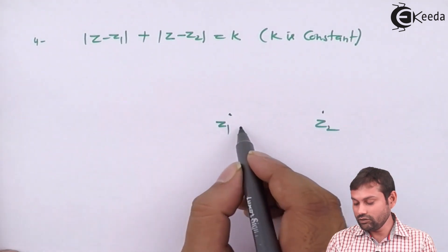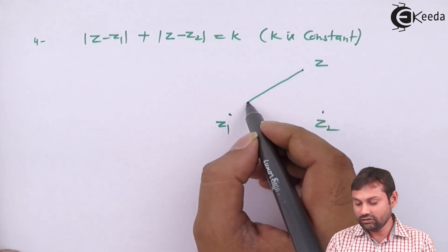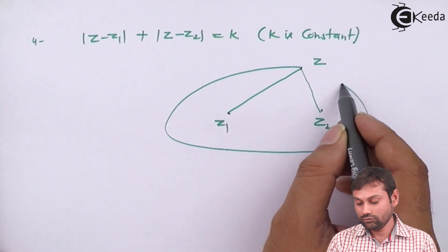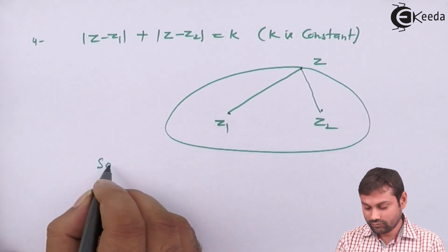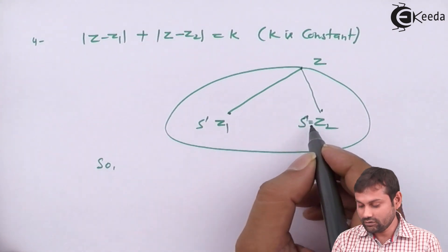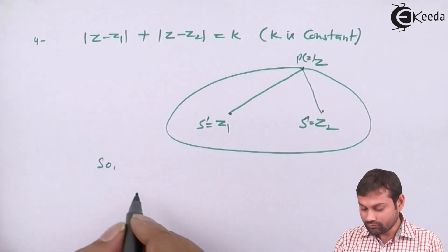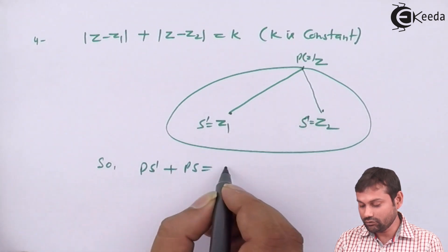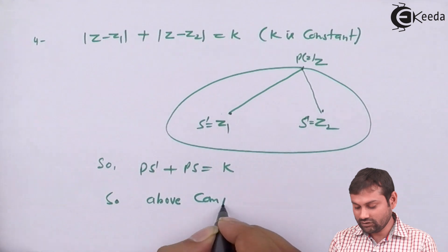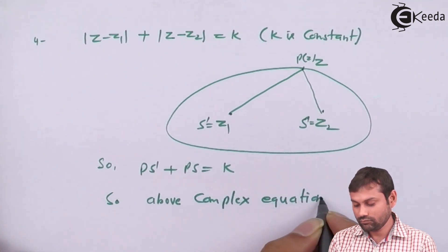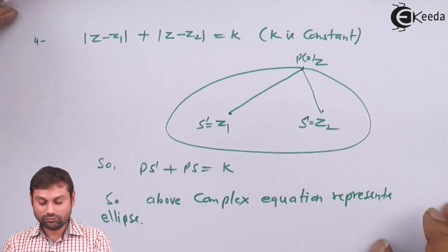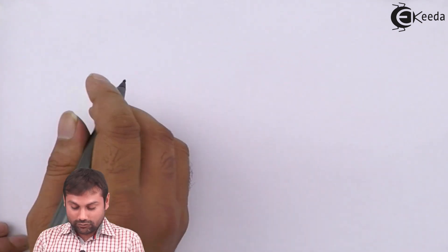This is only possible if suppose this is z, this is z1, this is z2 and there is a point z. So, this distance plus this distance is always a constant number. So, this represents an ellipse. We can say this is one focus S', this is another focus S. So, we can say PS' plus PS equals to a constant number. This is the condition for an ellipse. So, above complex equation represents ellipse.